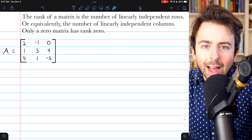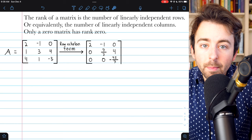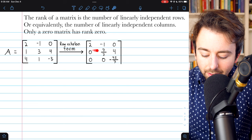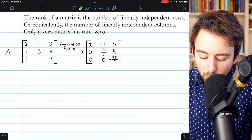Doing this to A gives us this matrix, and this tells us the number of linearly independent rows that A has. It's simply the number of non-zero rows in the row echelon form. In this case, we see that's three, so the rank of A is equal to three.